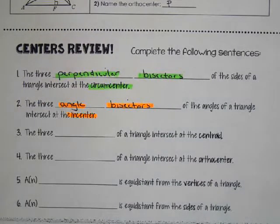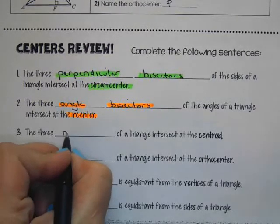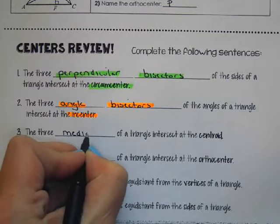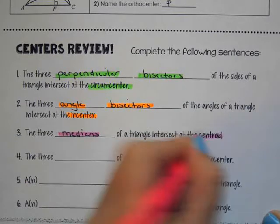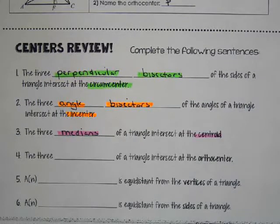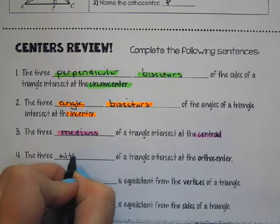The three medians of a triangle intersect at the centroid. And the three altitudes of a triangle intersect at the orthocenter.